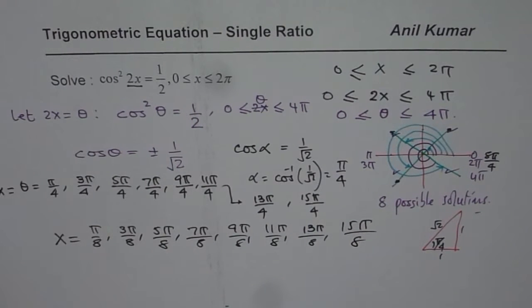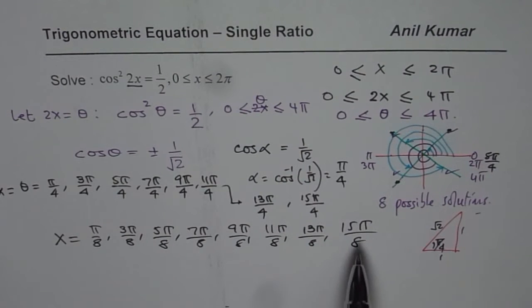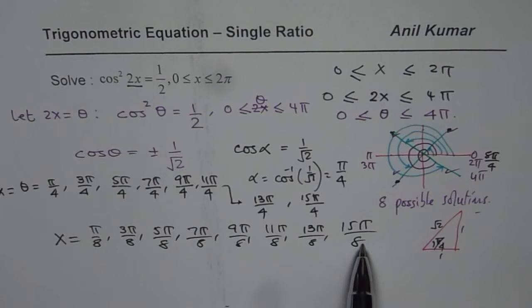So these are all the possible solutions within the domain of 0 to 2π. Do you see the x value? It is less than 2π. Do you appreciate that part? So that is how it is.